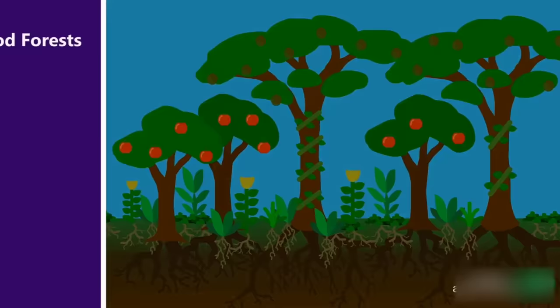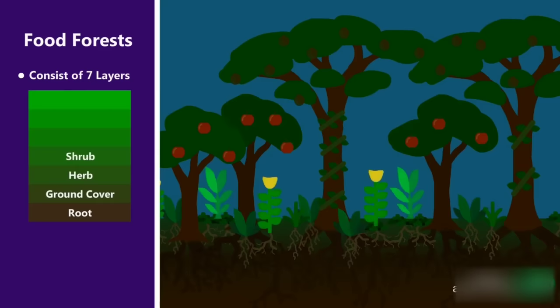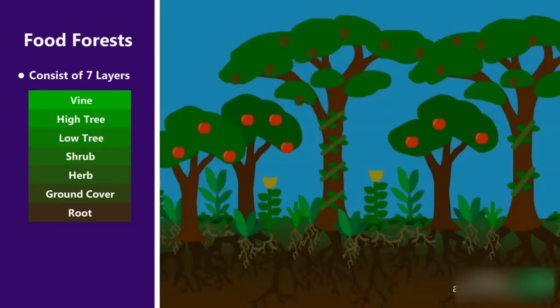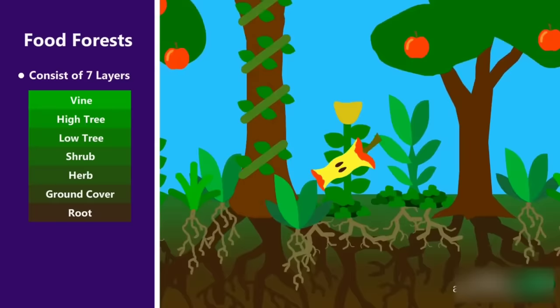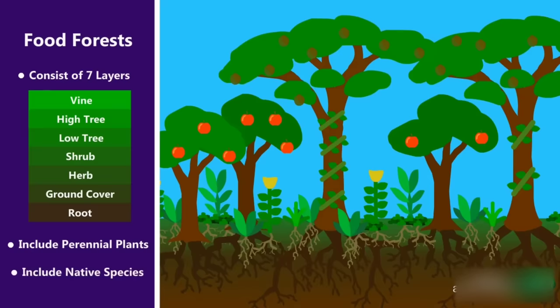Food forests are often thought of as comprising seven layers. The root layer, the ground cover layer, the herb layer, the shrub layer, the low tree layer, the high tree layer, and the vine layer. Every one of these layers either produces some sort of food or medicine or is in some way helpful to the system as a whole. The plants are mostly perennials and include as many native species as possible.